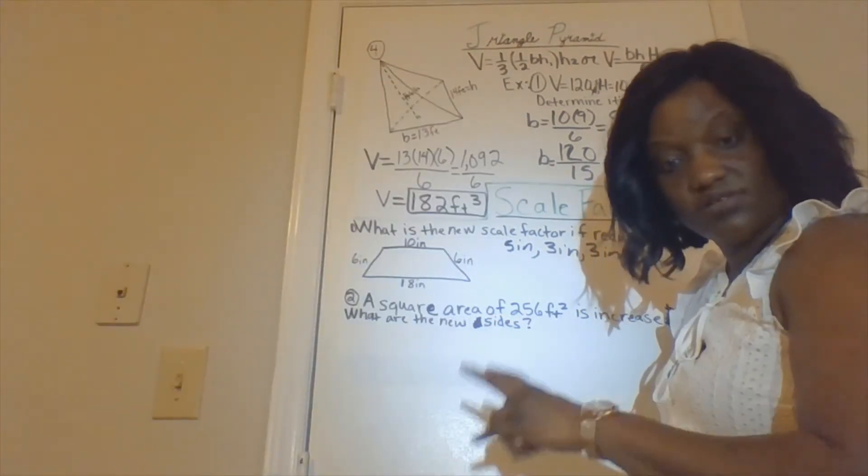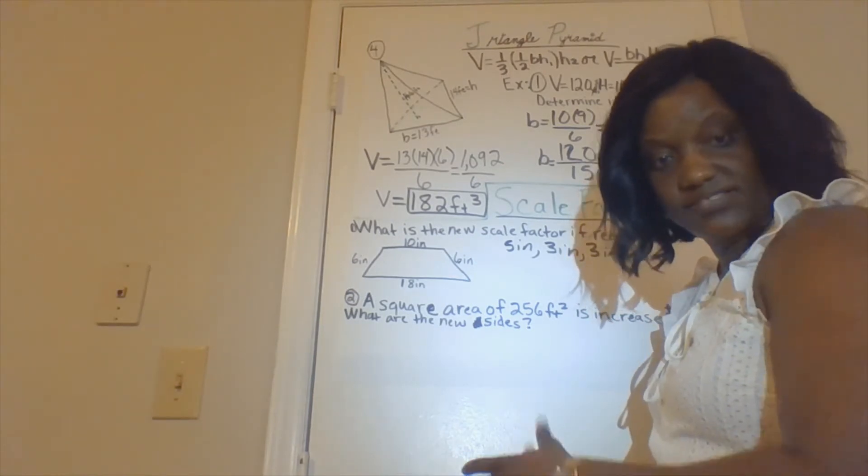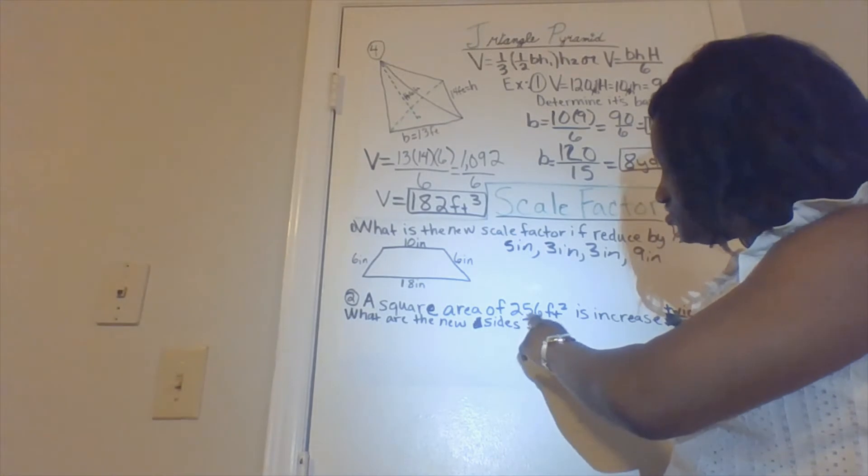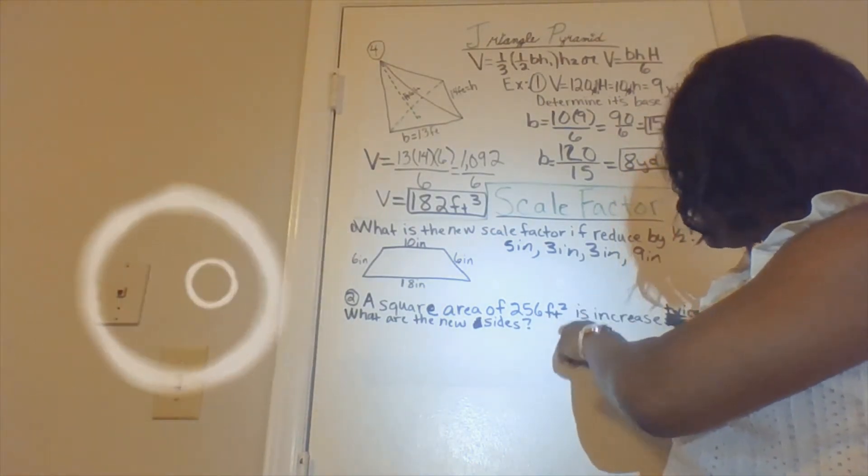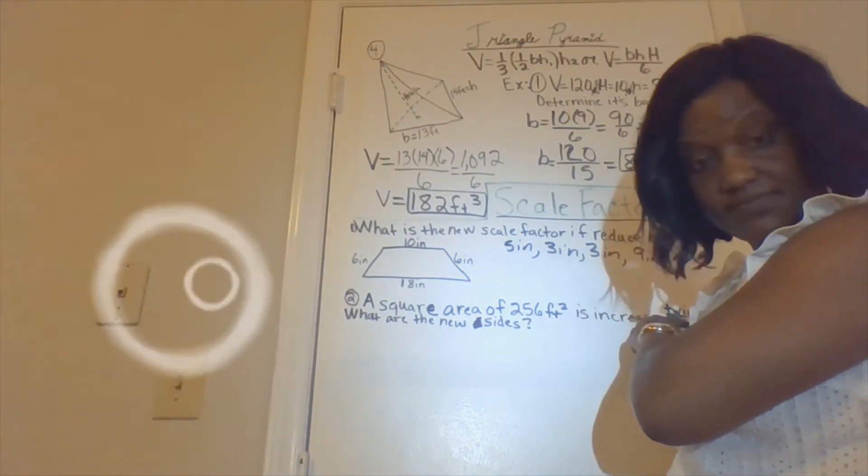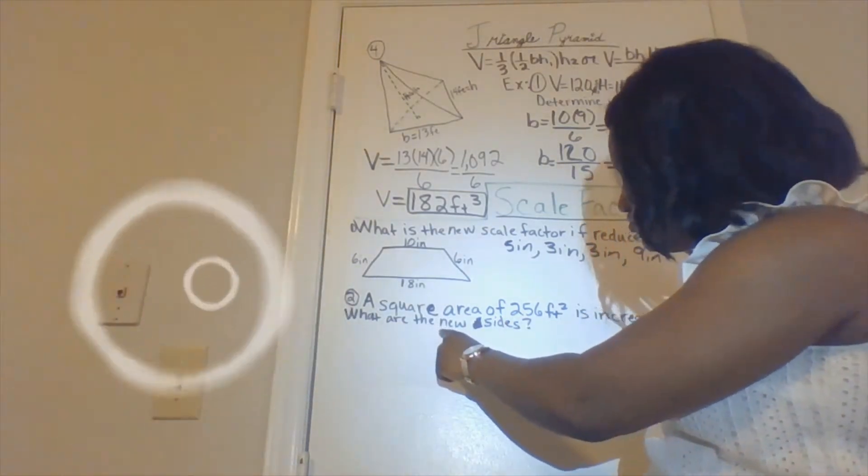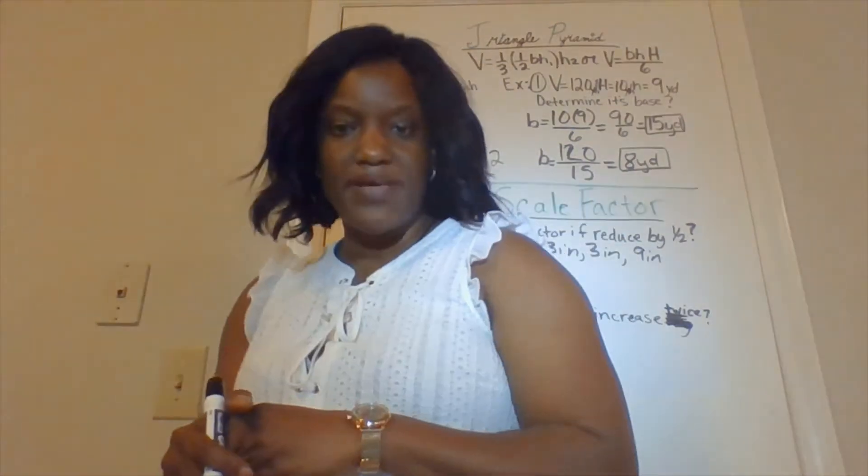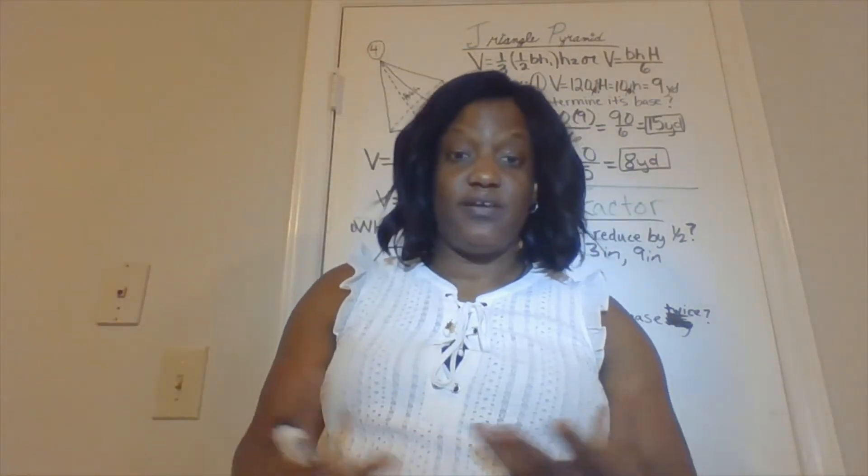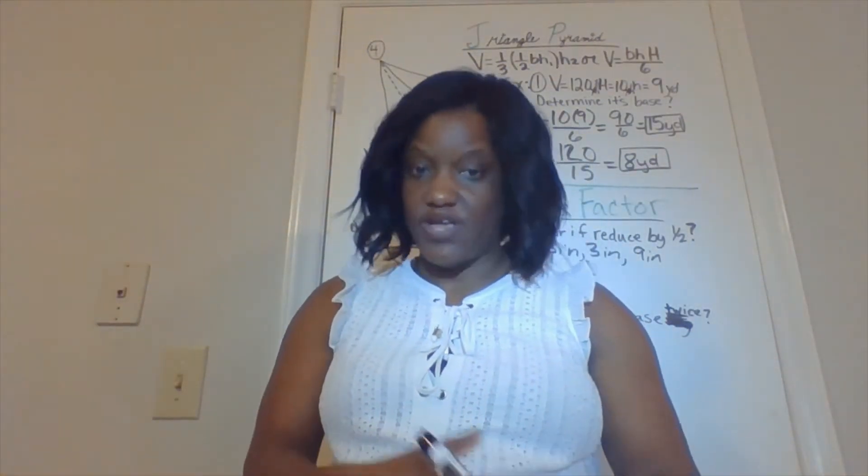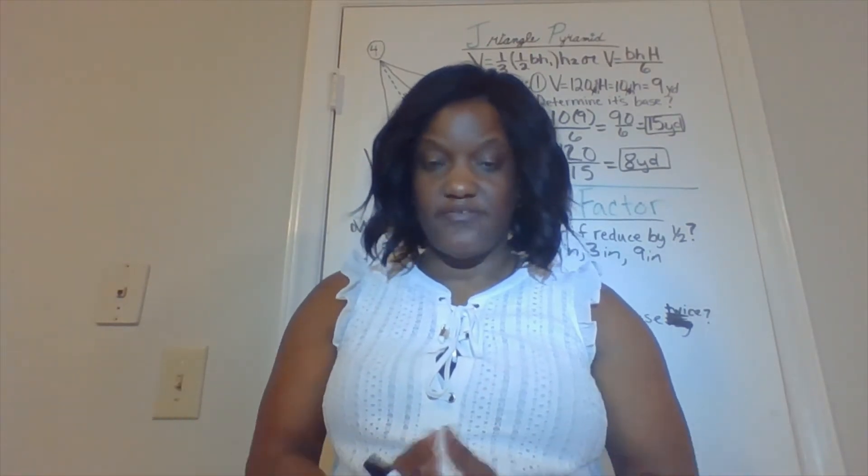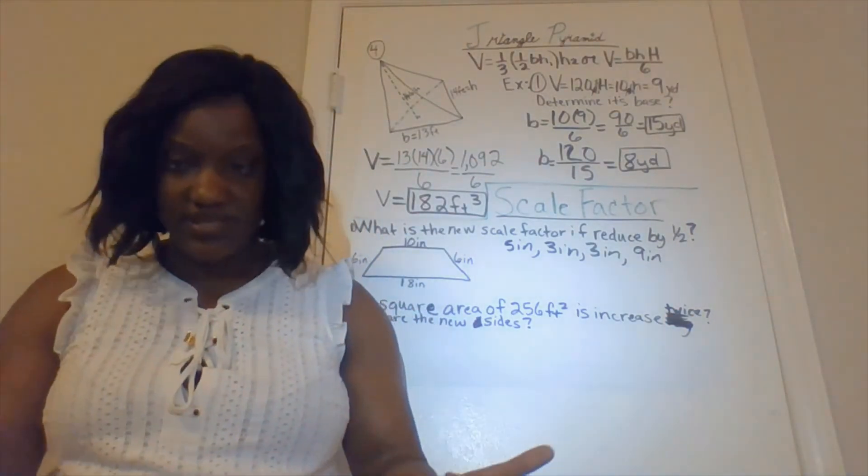My next question, if you turn to the second part of that presentation, a square area of 256 feet square is increased twice. What are the new sides? So basically, if they give you the area, you know, the opposite if you have a square. The opposite of a square is a square root. So basically, you have to find a square root of 256.